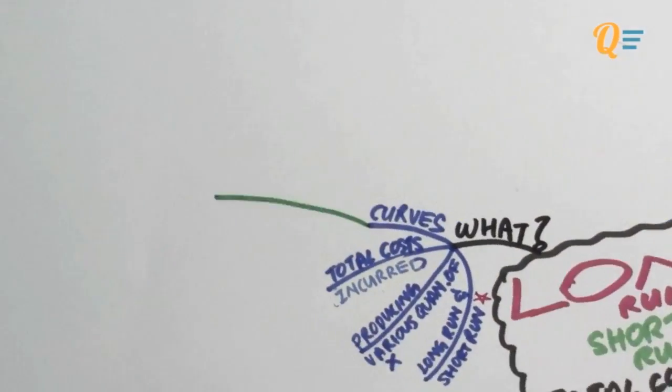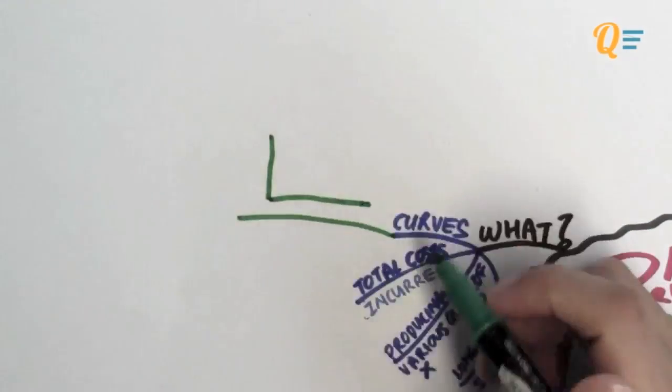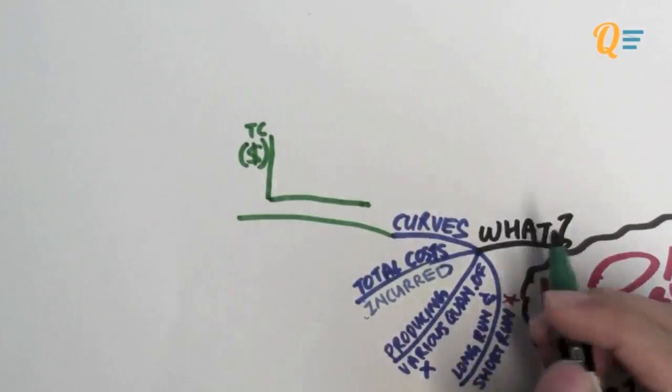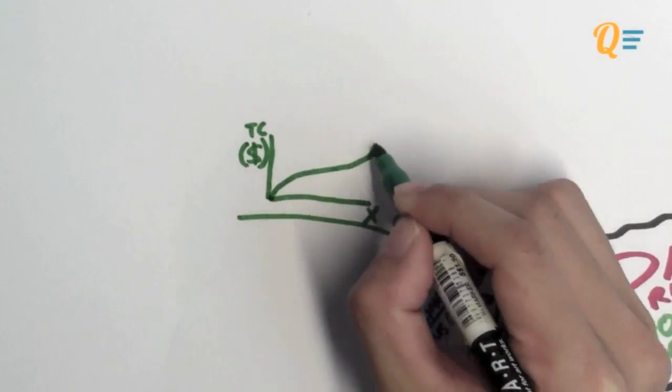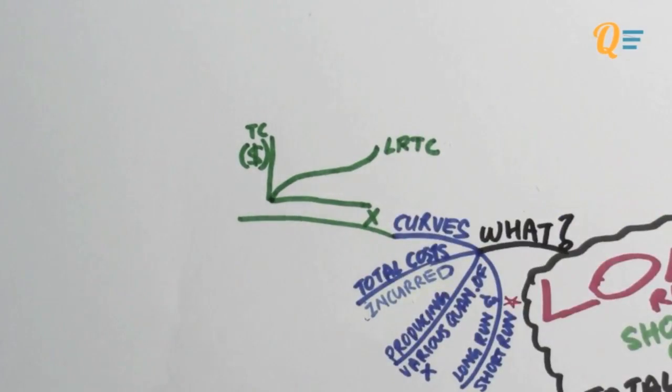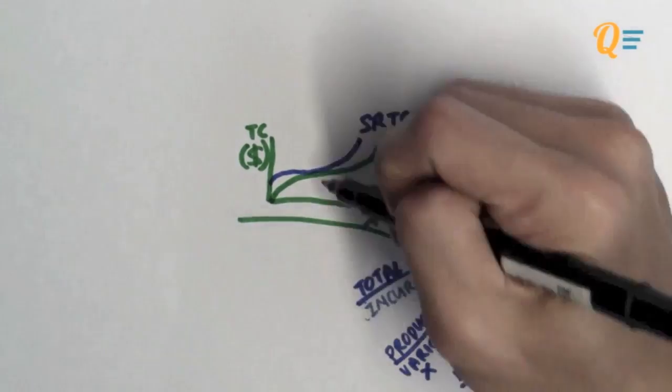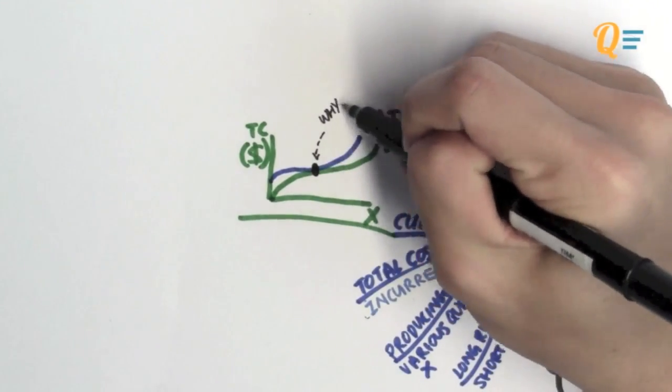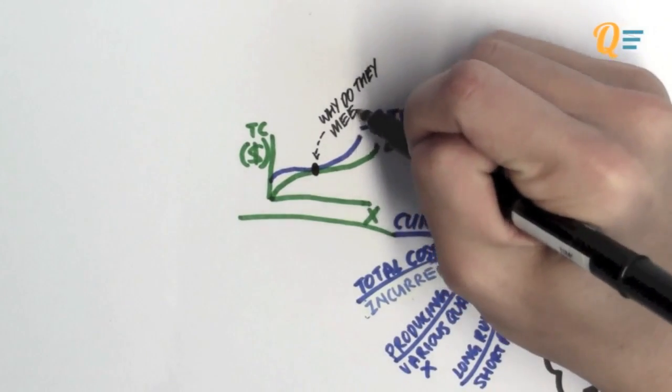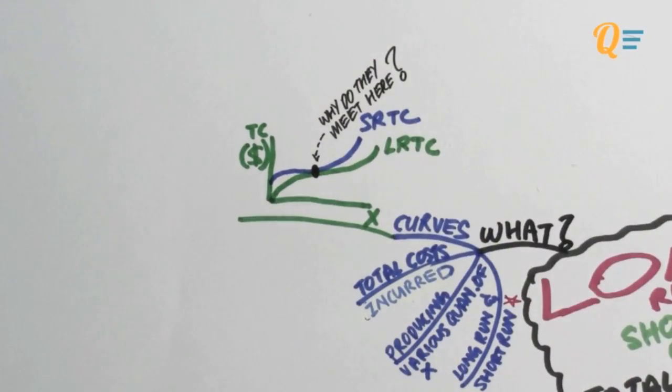So just let me show you what the total cost curves are. You have a graph with the total cost on the vertical axis and quantity on the horizontal axis. So that's your long run total cost and that is your short run total cost. One of the things you should be asking is why do they meet here, right? Why do they intersect at this point? So we're going to find out how we're going to be deriving these total cost curves.